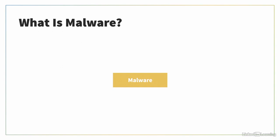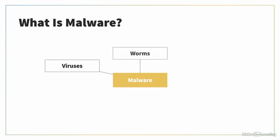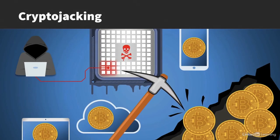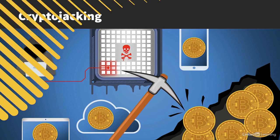Malware can take on many forms, including viruses, worms, trojans, rootkits, adware, and spyware. A growing form of malware attack is known as cryptojacking. This malware variant exploits a vulnerable computer and uses its resources to mine cryptocurrency.